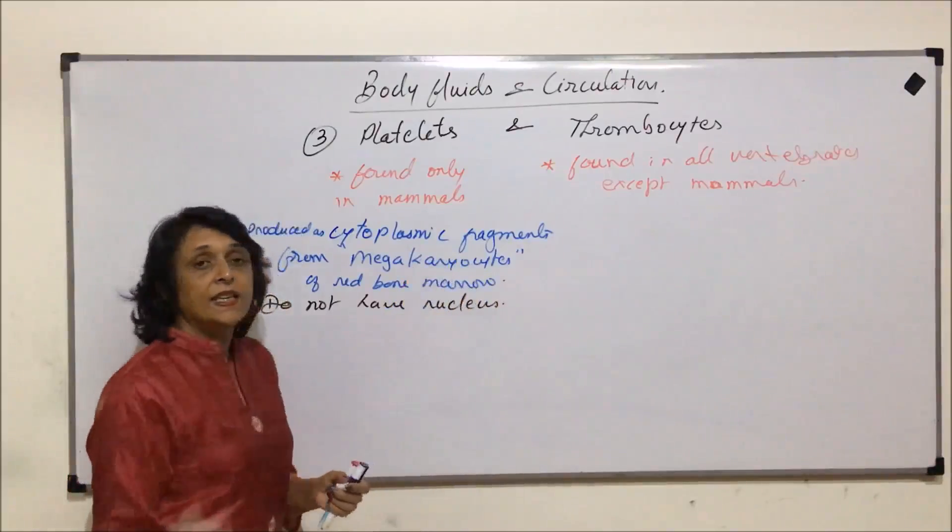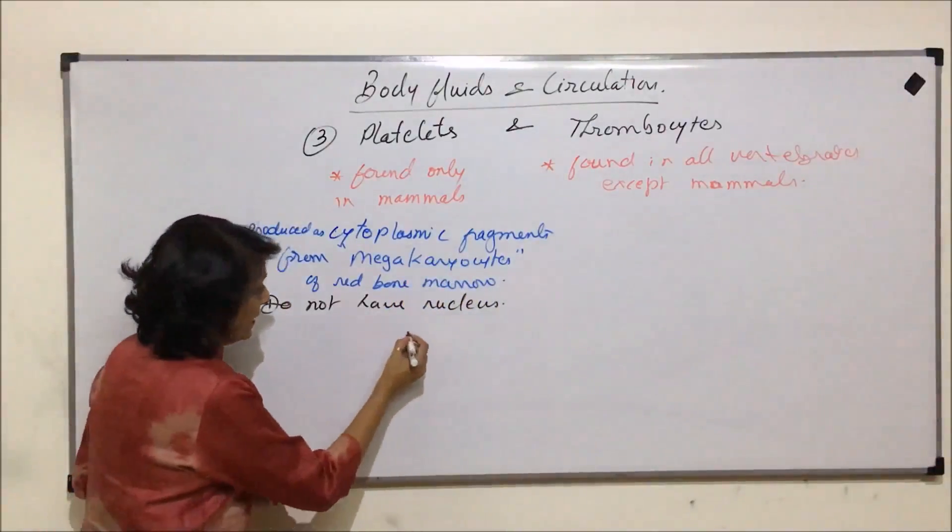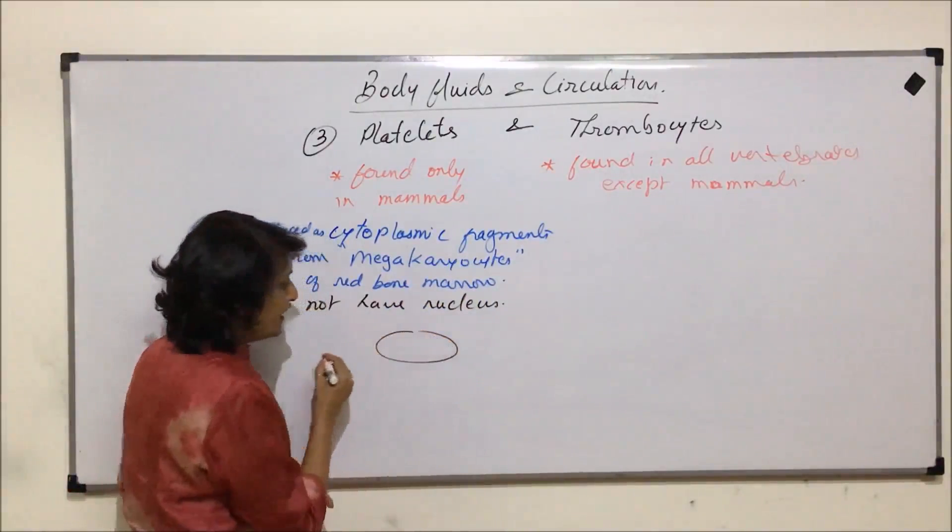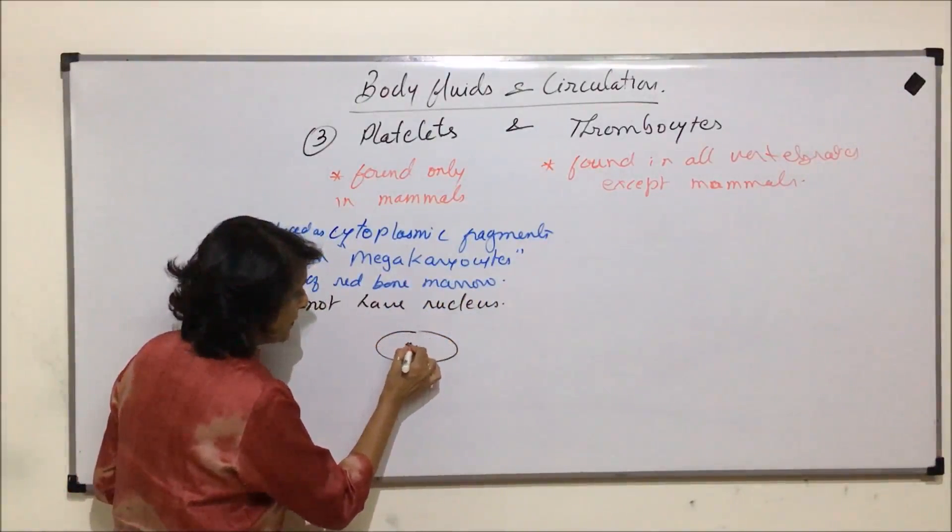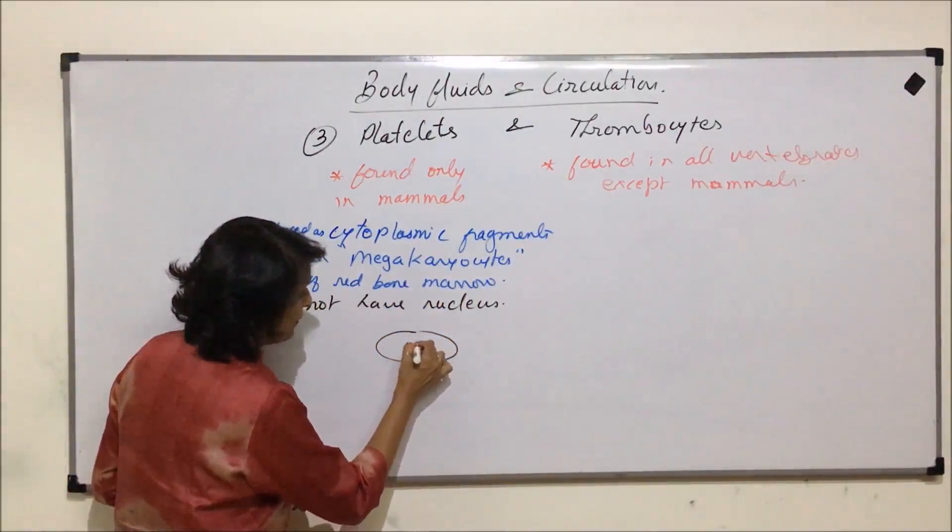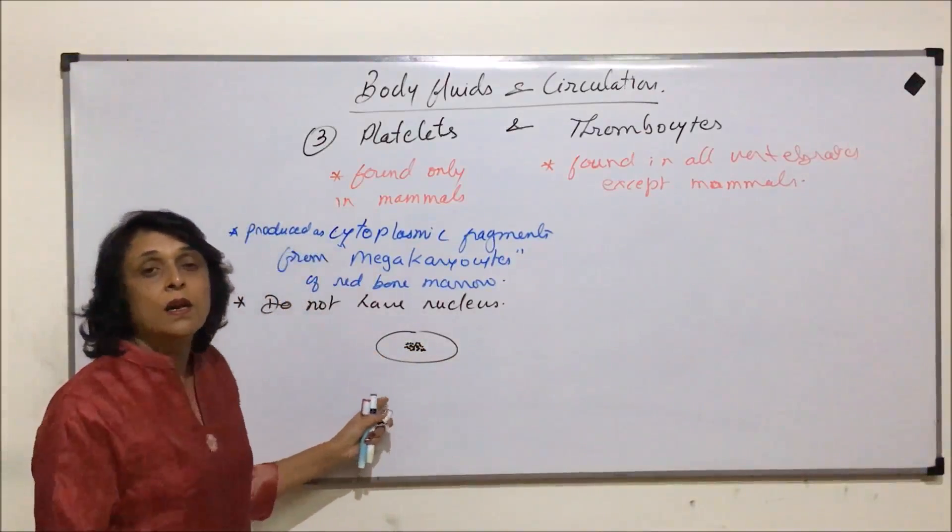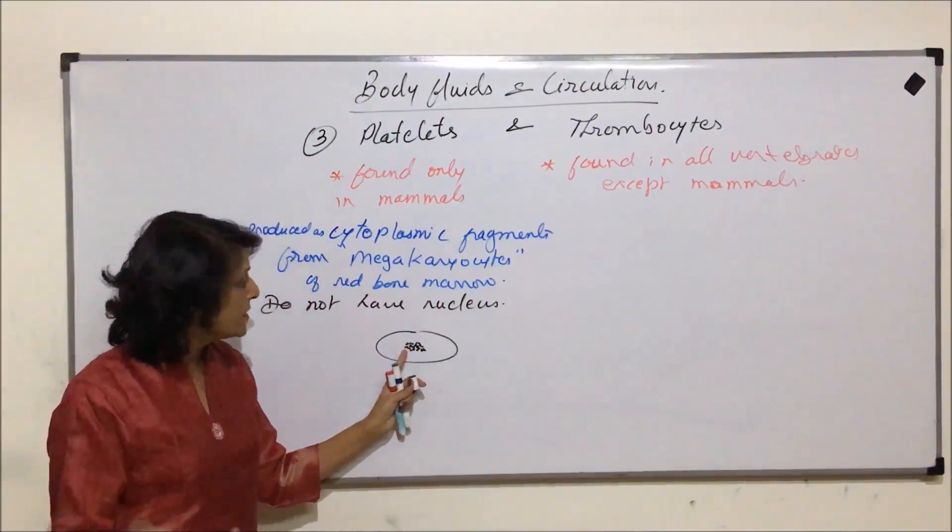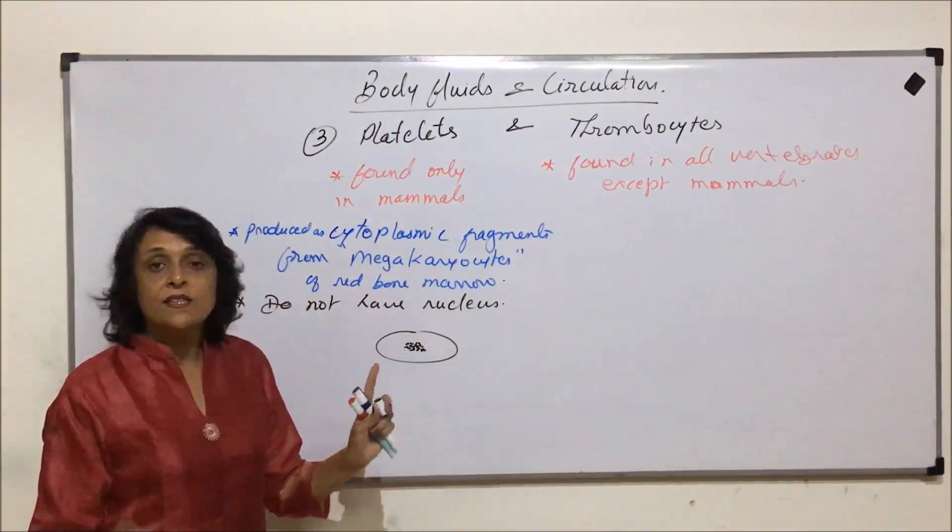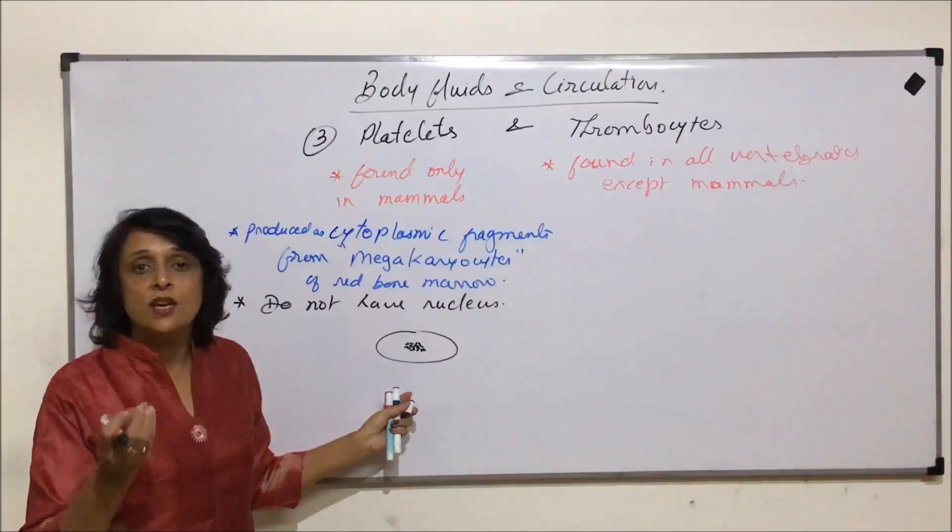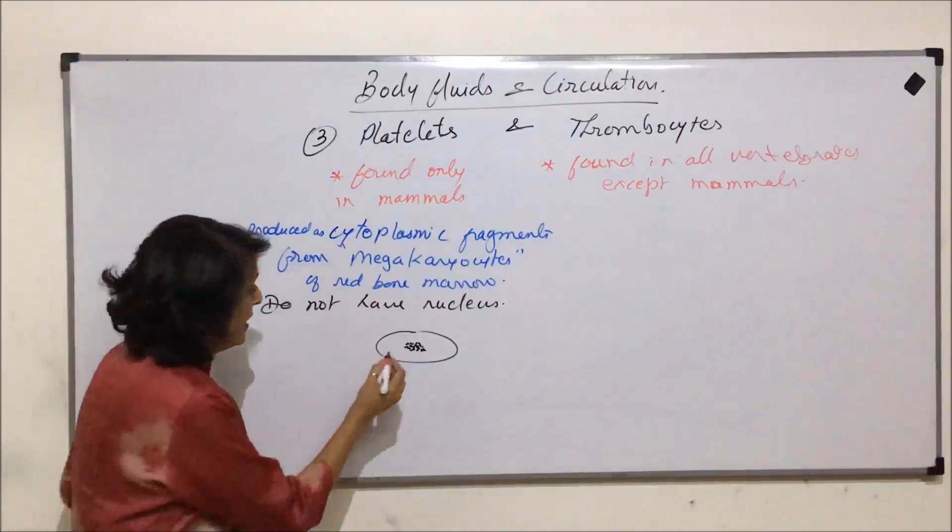But if we see the structure, they are oval in shape, and when we see the structure we find something dark in the middle of the platelets. Many times by seeing something dark in the middle we get confused that this is the nucleus. But this is not the nucleus, this is just dense material.